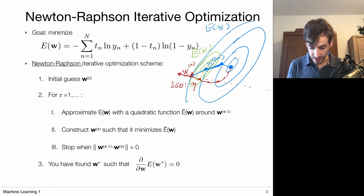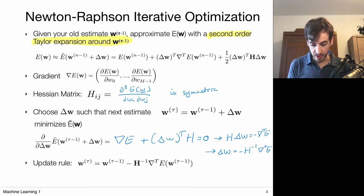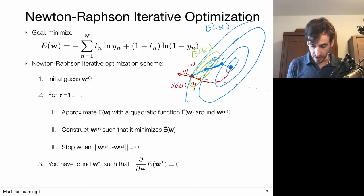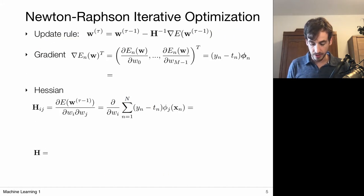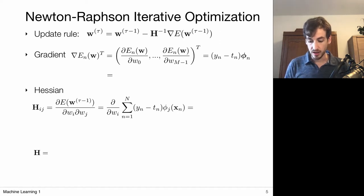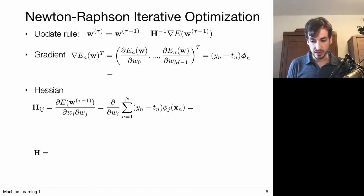Returning to the figure: we make a quadratic approximation of the error function around the initial w, solve for the minimal value — that gives delta-w relative to w-naught — and jump to the next weight. This is the update rule. We do not need to define a step size because we immediately jump to the next optimal location. What we need to compute is the gradient and the Hessian.